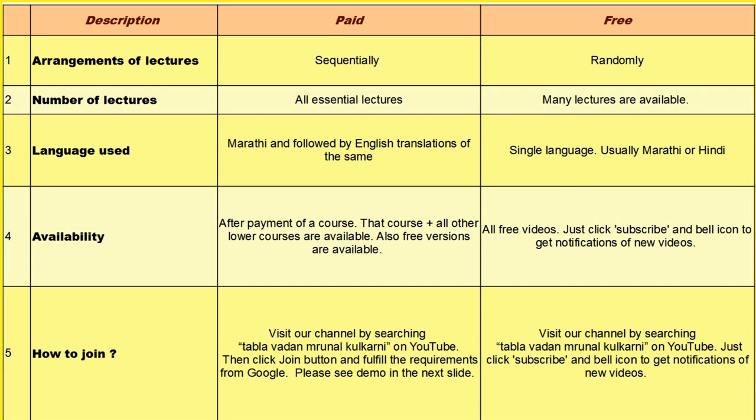The first point of comparison is description — the arrangement of lectures. In the paid course, lectures are sequentially arranged, whereas in the free course they are randomly arranged. Regarding number of lectures, the paid course provides all essential lectures, while many lectures are available in the free version. For language, the paid course uses Marathi as the primary language followed by English translation, whereas the free course uses only a single language, usually Marathi and sometimes Hindi.